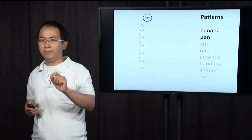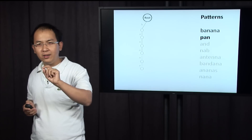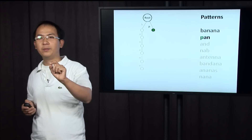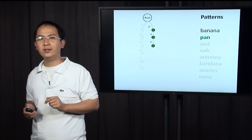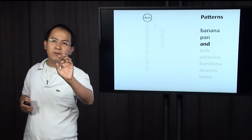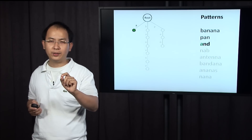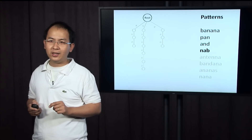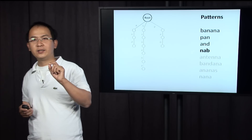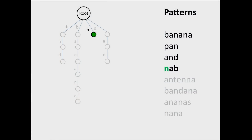For the next pattern, P-A-N: we start from the root, there's no P, so we create a new branch. Then A and N. The next pattern is A-N-D: we start from the root, there's no A-N going down, so we create one. The next pattern is N-A-B: we start from the root, we don't have N, so we create a new one, then A and B.